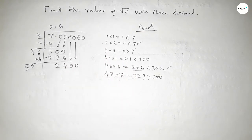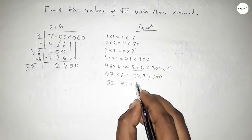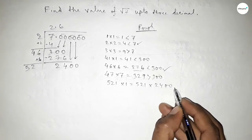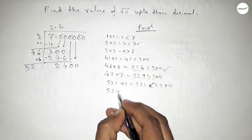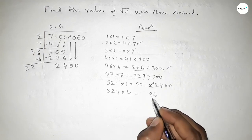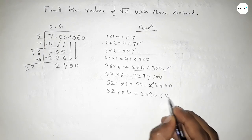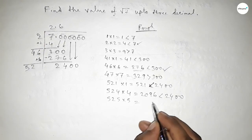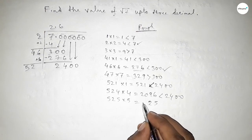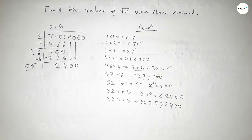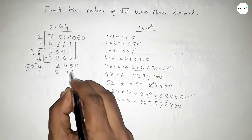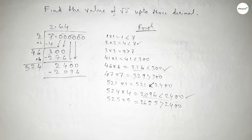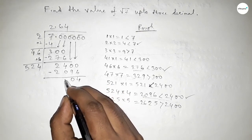Now what should be put beside 52? We need a digit such that 52-something times that digit is less than 2400. Trying 1: 521×1 less than 2400. Trying 4: 524×4=2096, less than 2400. Trying 5: 525×5 is greater than 2400. So we take 4. Putting 4: the product is 2096. Subtracting gives remainder 304.